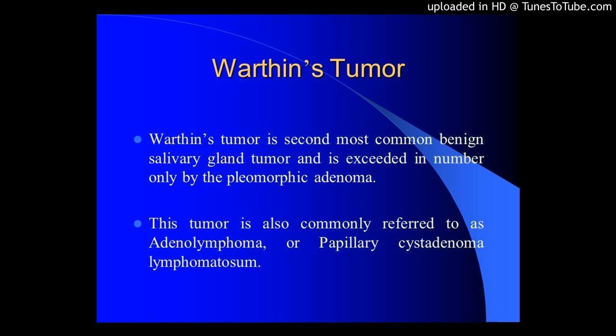The most common discordance was in the category of papillary proliferation with minimal lymphoid infiltrate. One case proved to be oncocytoma and the other was papillary oncocytic cystadenoma. The other major pitfalls were the interpretation of atypical squamoid cells. Their presence in a lymphoid background requires consideration of Warthin's tumor, mucoepidermoid carcinoma, and metastatic squamous carcinoma.